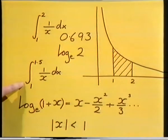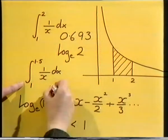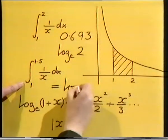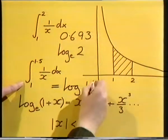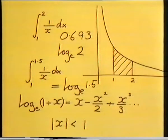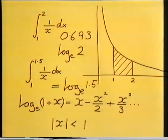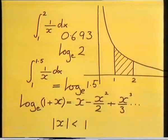We've got a Taylor series for log of 1 plus x to the base e, and it works for mod of x less than 1. The integral that we started with — the integral from 1 to 1.5 — is actually log of 1.5 to the base e. If you want to work that out, you can either look it up in tables or use this series.